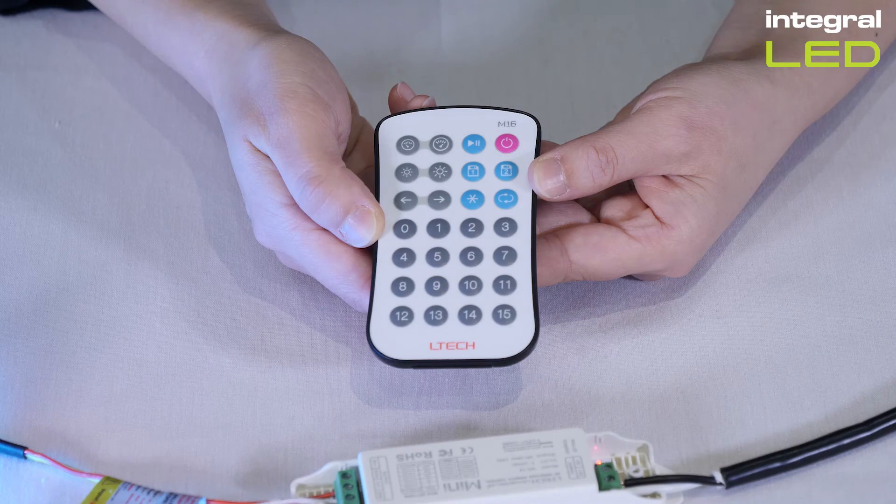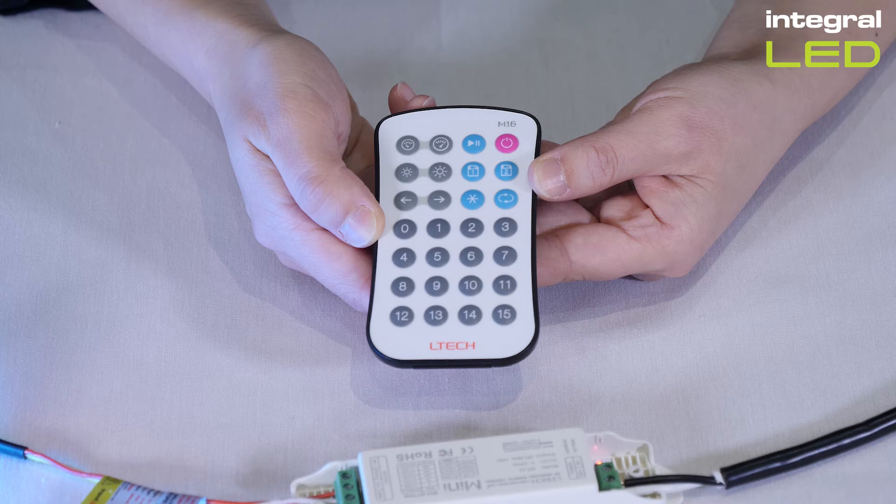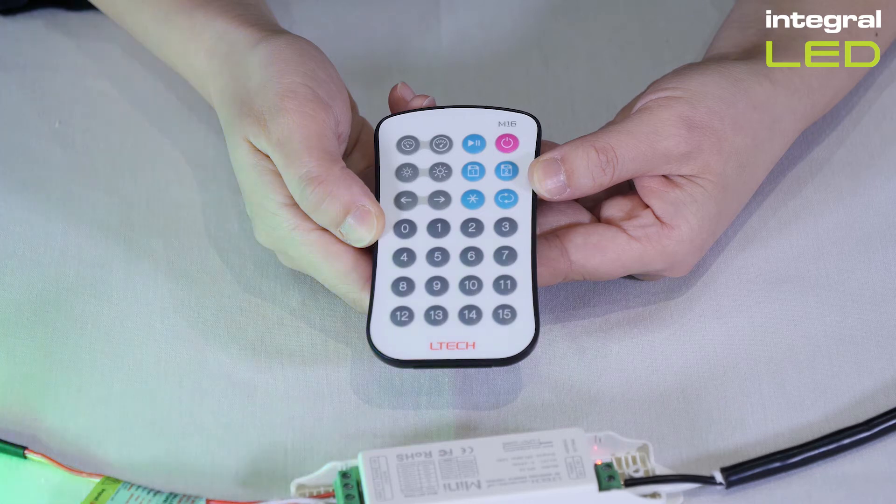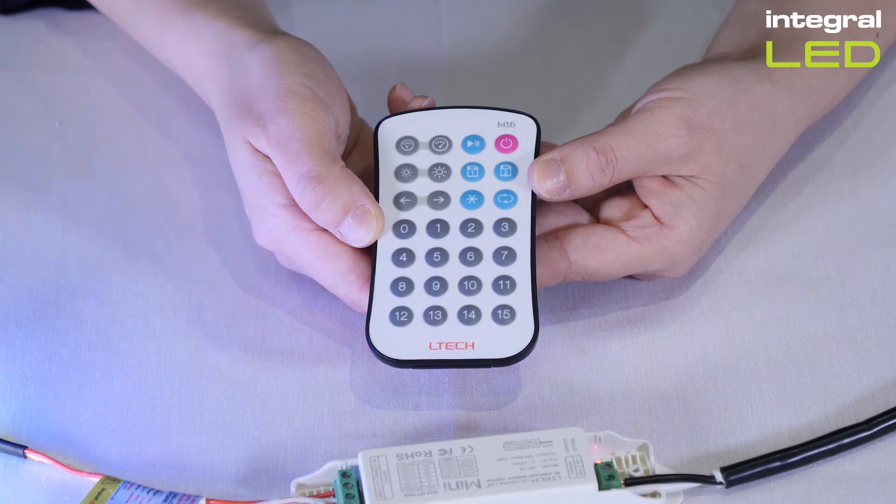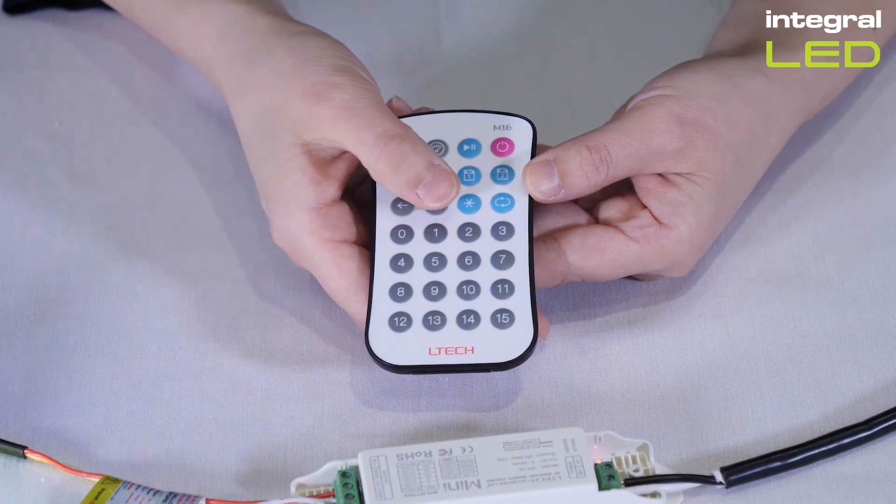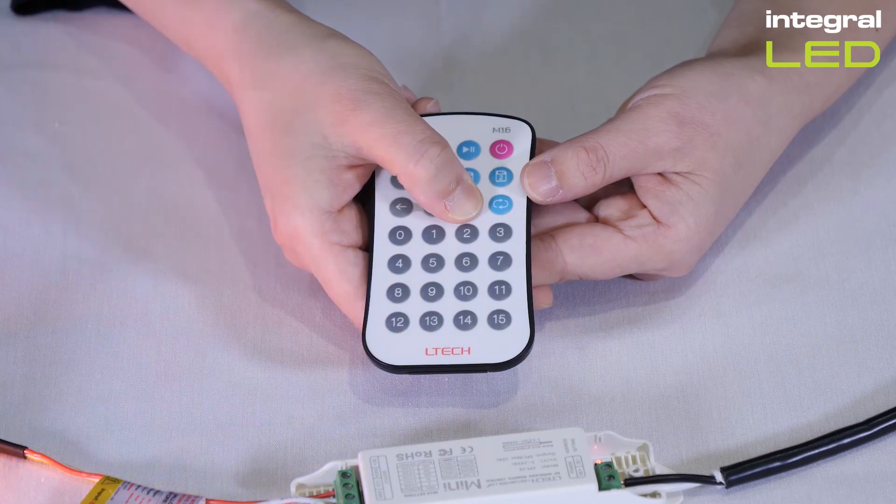You must also set the correct number of pixels for your strip by pressing star, star, followed by the number of pixel chips. This will depend on the length it is cut to. For example, five meters contains 100 pixel chips, so you would press star, star, 100.